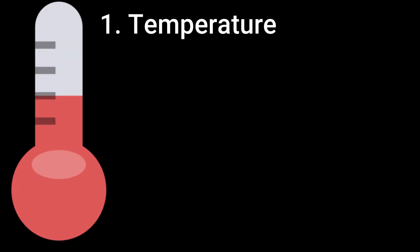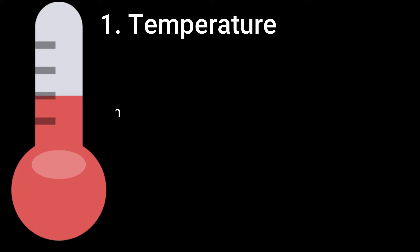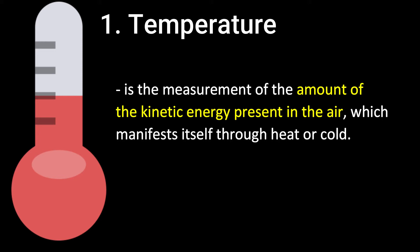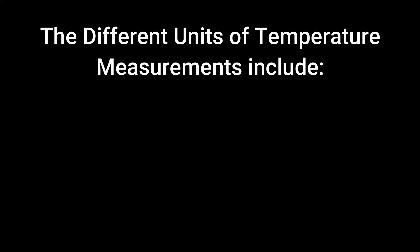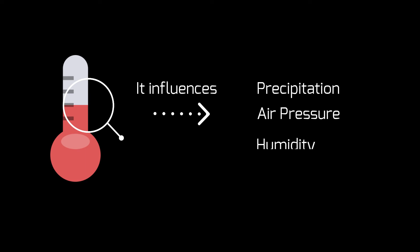Everyone knows what temperature is. Whenever we discuss the weather, temperature is one of the few elements that come up. Temperature is the measurement of the amount of kinetic energy present in the air, which manifests itself through heat or cold. People use different scales for temperature such as Kelvin, Celsius, and Fahrenheit. Temperature is one of the most important elements of weather and climate because it influences other elements such as precipitation, pressure, and humidity.